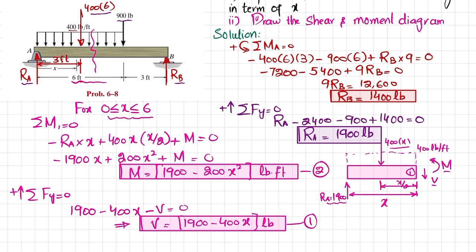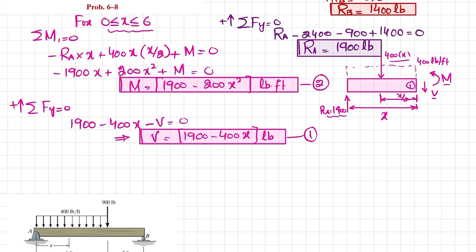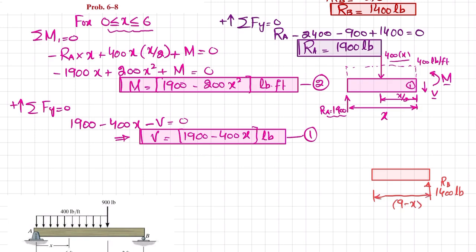Now we cut the beam in the second region. The cut is at distance x from the left, so the remaining distance from the right support B is 9 − x. Drawing the free body diagram from the right: at the right end we have Rb = 1400 pounds, the distance to the cut is 9 − x, and at the cut face we have shear force V and reaction moment M. Call the cut point two.